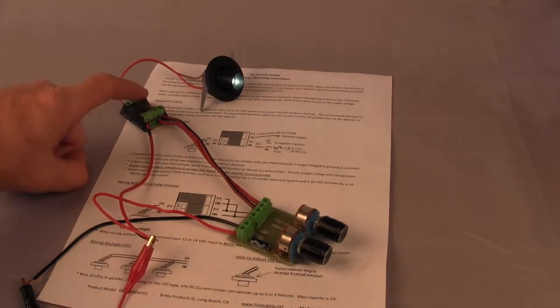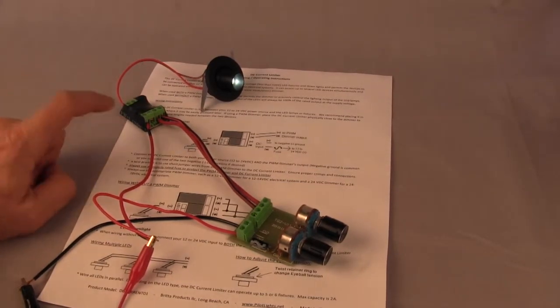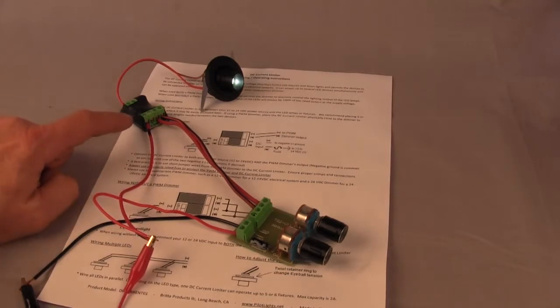In this case, we're using a dimmer. It's connected to the right side of the inputs over here. And our power source, which is 12 volts in this case, is connected on the left side. Notice you don't need the additional ground.